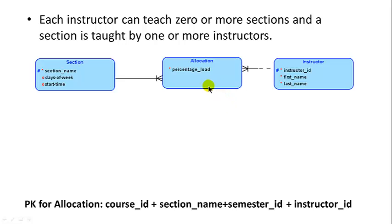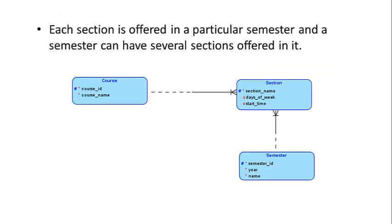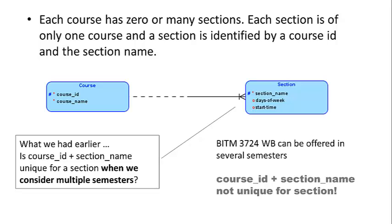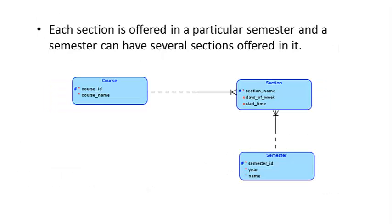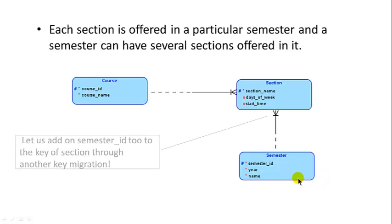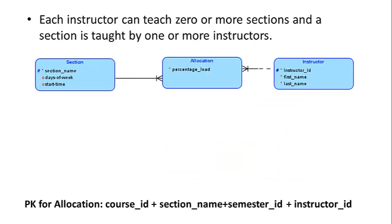The primary key for a location is the primary key of section plus the primary key of instructor. We already saw from the previous slide that the primary key of section itself is course ID, section name, and semester ID. Therefore the primary key for allocation is course ID plus section name plus semester ID — all of section's primary key — and then we add the primary key of instructor, so plus instructor ID. Allocation actually has a primary key consisting of four different fields.